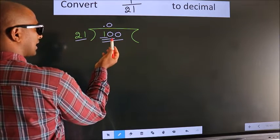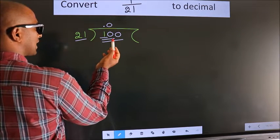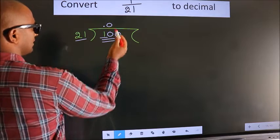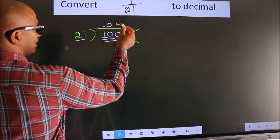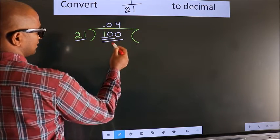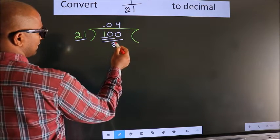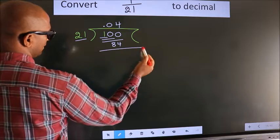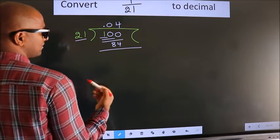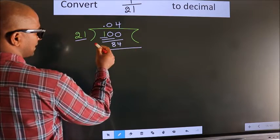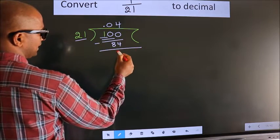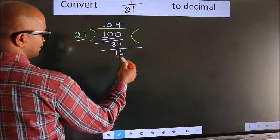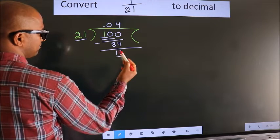A number close to 100 in the 21 table is 21 fours: 84. Now we subtract and we get 16.